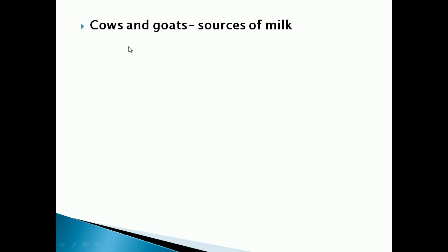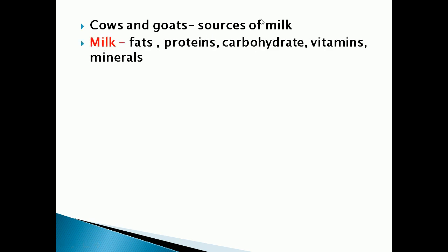Cows and goats are the animals from which we will get milk. They are acting as a source of milk. Milk is rich in fats, proteins, carbohydrates, vitamins, and minerals. Why should we have milk in our diet? Because we want to get essential nutrients such as fats, protein, carbohydrates, vitamins, and minerals.